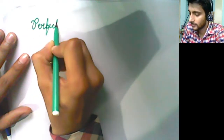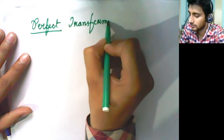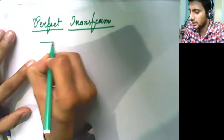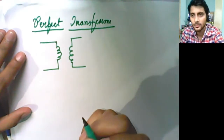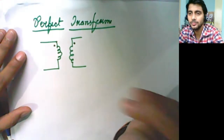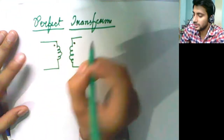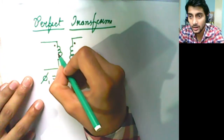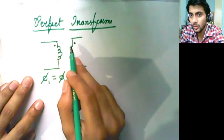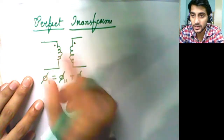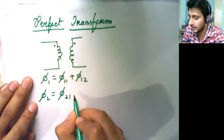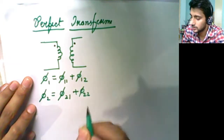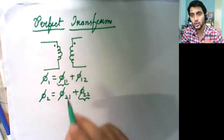Now come to the perfect transformer. A perfect transformer does require dot convention. Here you have coil one and coil two, with dots on the same end for simplicity. We have to write the flux linkage equations: the flux through coil one is φ11 (self) plus φ12 (mutual from coil 2). Similarly for φ2: φ21 (mutual from coil 1) plus φ22 (self). The self-flux terms give self-inductance and the cross terms give mutual inductance.